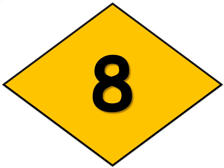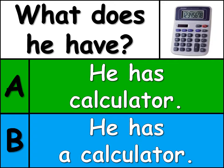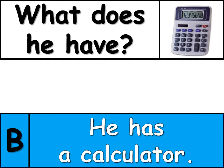Here's question number eight. What does he have? Is the answer A or B? The answer is B. He has a calculator. A didn't use 'a' before the singular noun.